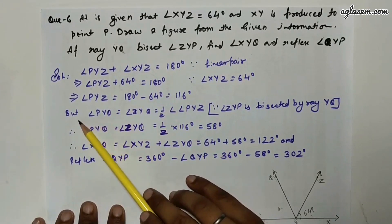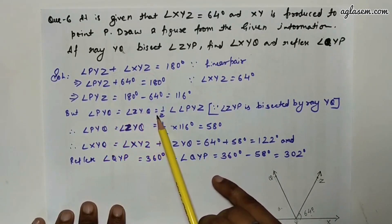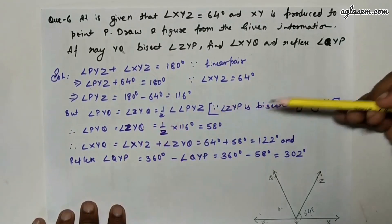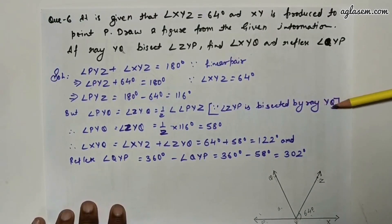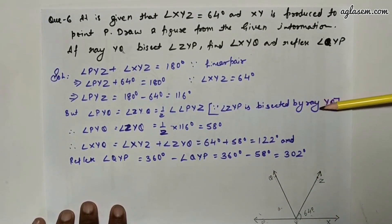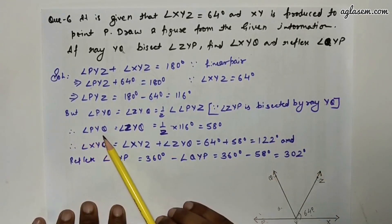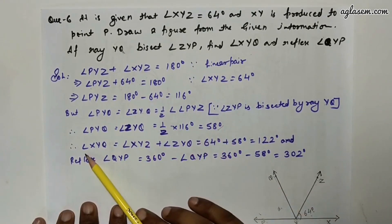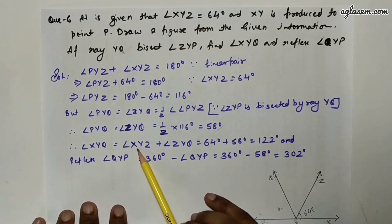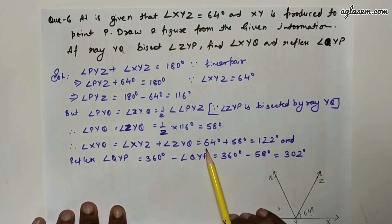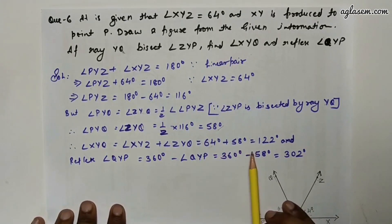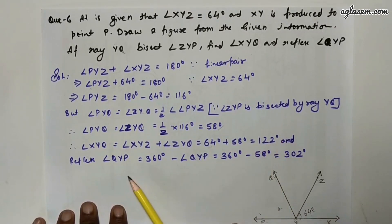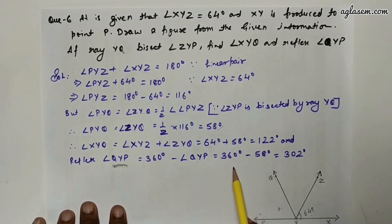Since ray YQ bisects angle ZYP: angle PYQ = angle ZYQ = ½ × 116° = 58°. Therefore angle XYQ = angle XYZ + angle ZYQ = 64° + 58° = 122°. And reflex angle QYP = 360° − 58° = 302°.